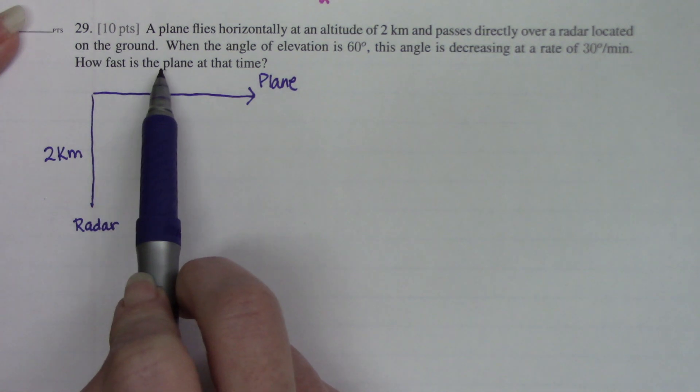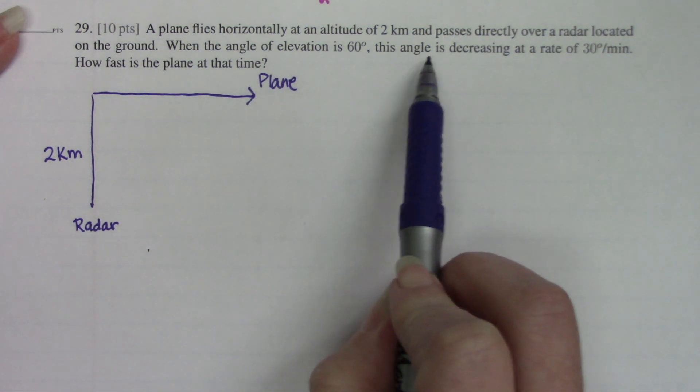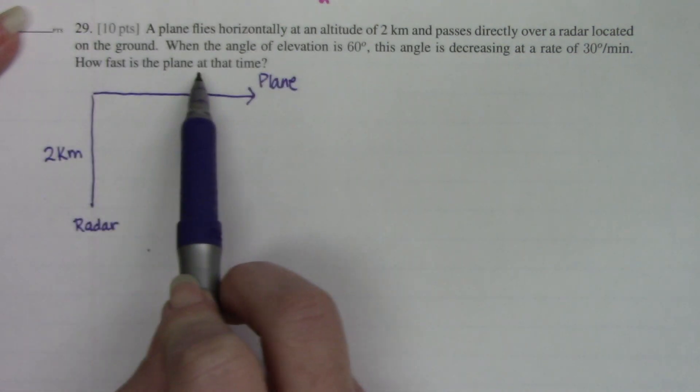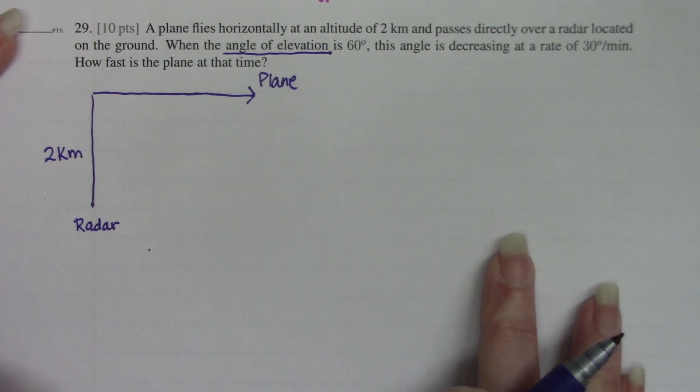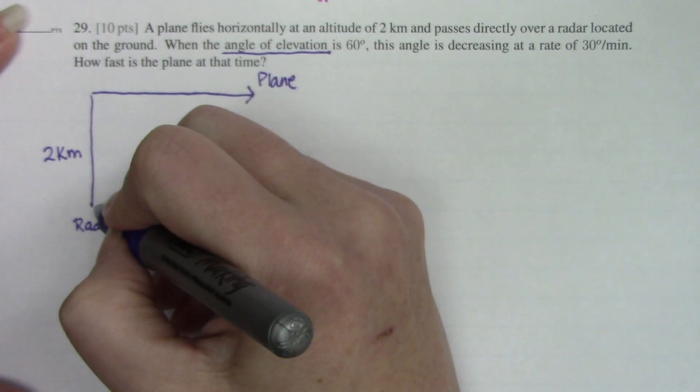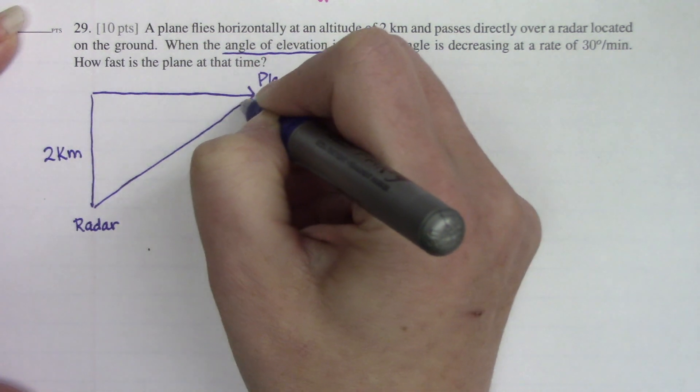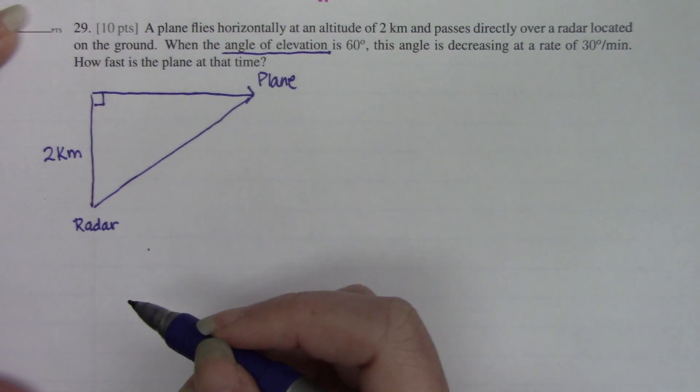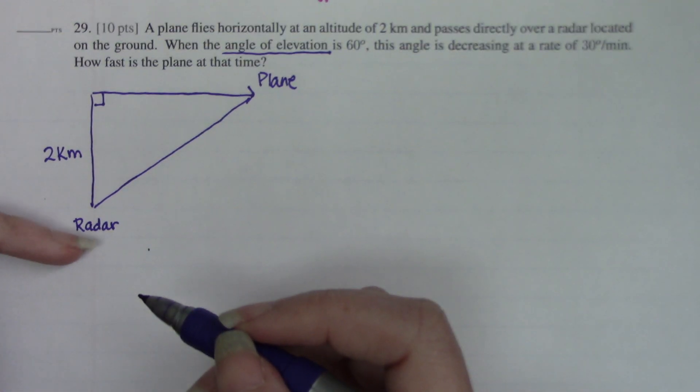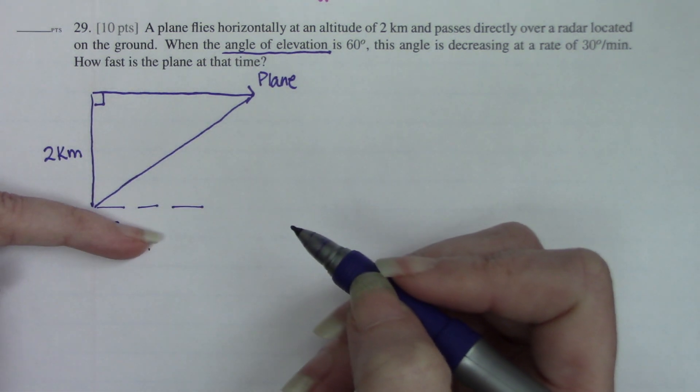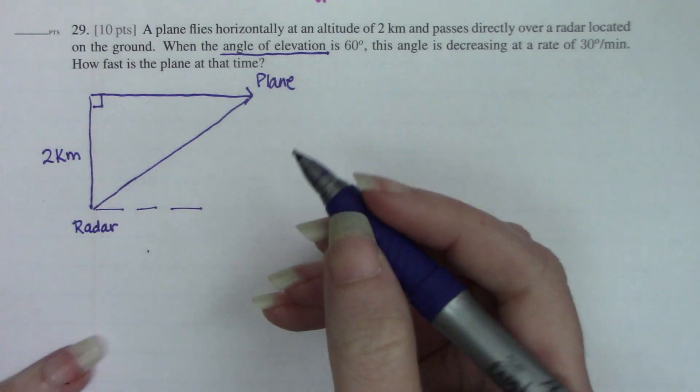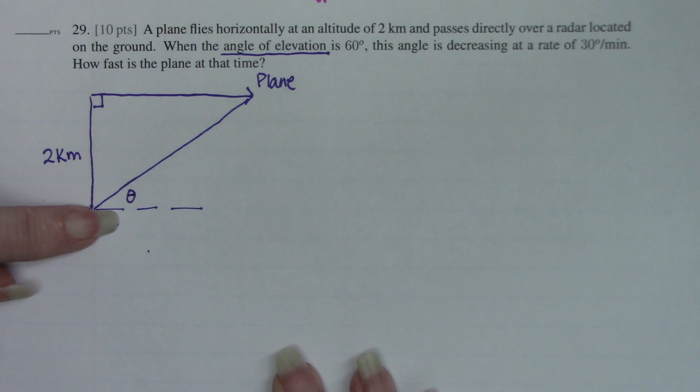Then we're told when the angle of elevation is 60 degrees, this angle is decreasing at a rate of 30 degrees per minute. How fast is the plane flying at that time? So angle of elevation has a very specific meaning. Let's complete this triangle. Angle of elevation is measured off the horizontal at the ground. So the angle of elevation is located here. The angle you were given is actually outside the obvious triangle, not inside the triangle.